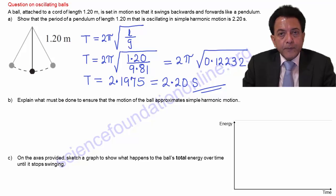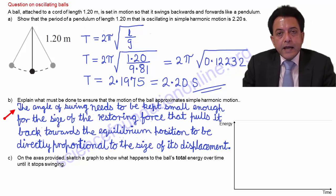In the case of a pendulum, the motion is usually considered to approximate well to a true simple harmonic motion, provided that the angle is less than 10 degrees. So the answer can be worded as the angle of swing needs to be kept small enough for the size of the restoring force pulling it back towards the equilibrium position to be directly proportional to the size of its displacement.